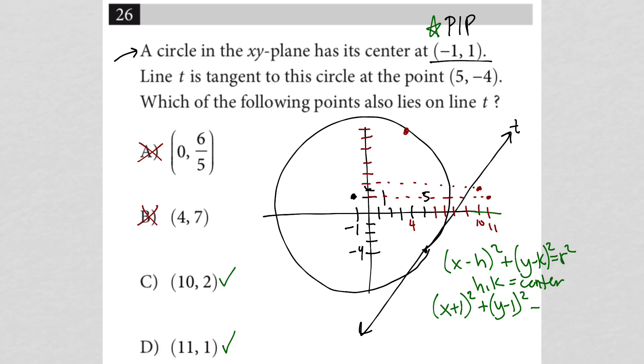So X plus 1 squared plus Y instead of minus K, Y minus 1 because K is plus 1. So minus 1 squared, and then I don't know R, but I can find out R. My radius is the distance from the center to, let's call it that point of tangency, because that's the only other thing I really know about my circle is that point 5, negative 4. So how would I find the distance of that point?